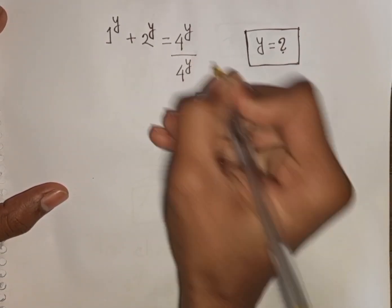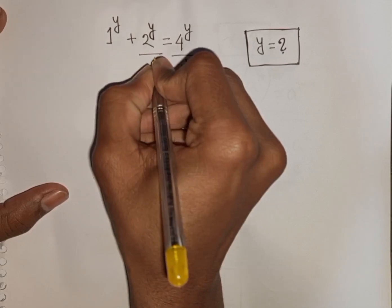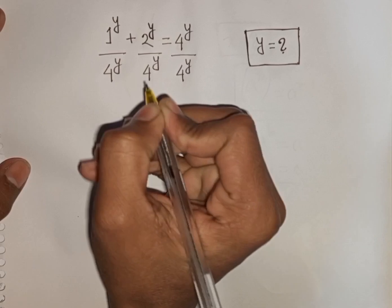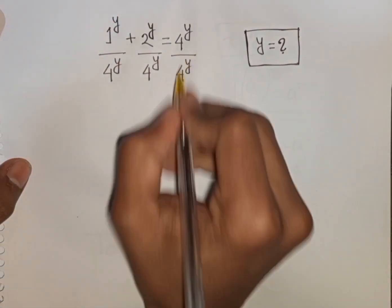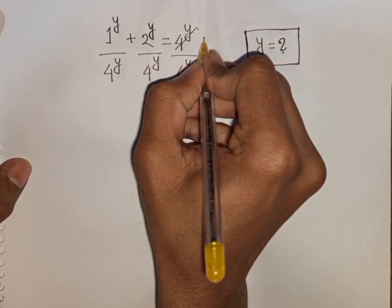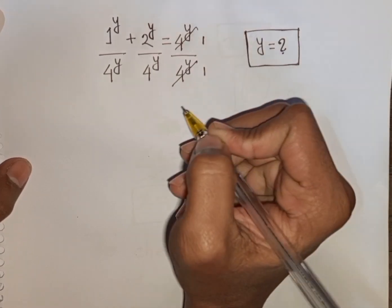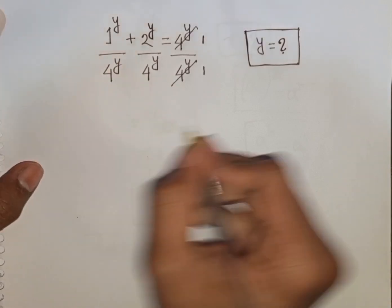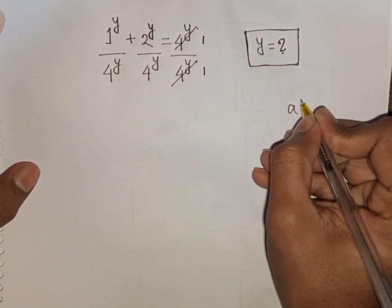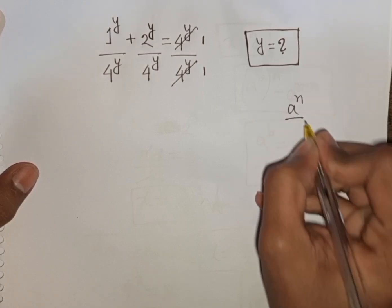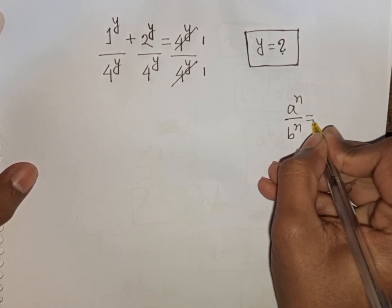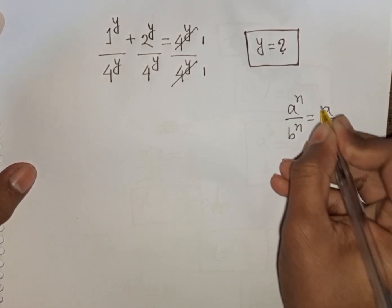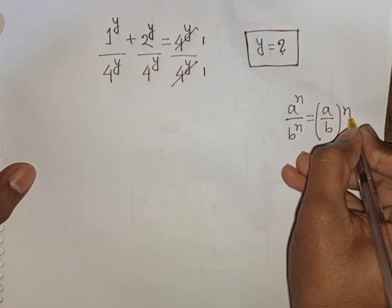Dividing each term by 4 power y. Now we see this 4 power y will be cancelled. We have the same power y but different bases. Remember this exponential rule: a power n over b power n is equal to (a over b) power n.